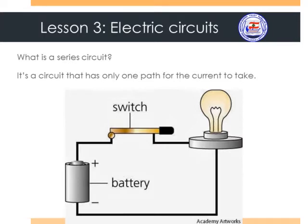We previously learned that a circuit is a closed path that is made from devices through which a current circles. A series circuit is a circuit that has only one path for the current to take. For example, if you look at the picture in front of you, you can only see one loop or one path. So this is called a series circuit.